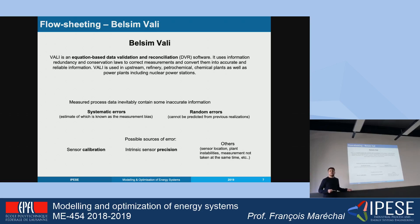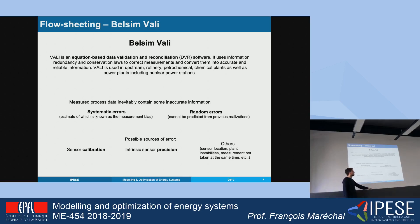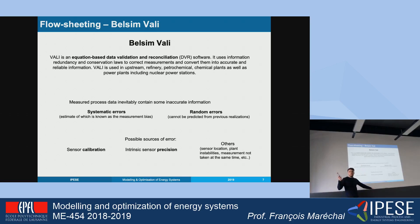Vali is a really good tool because every sensor installed in any industrial plant is affected by two different kinds of errors: systematic errors and random errors. Systematic errors are normally due to calibration and estimate the measurement bias. Random errors are not correlated to previous samples — they are truly random and connected to the intrinsic sensor precision. There are also other factors that can impact measurement quality, such as the location of the plant, availability, and shutdowns.